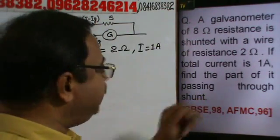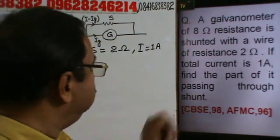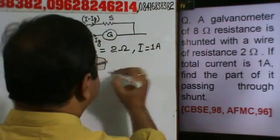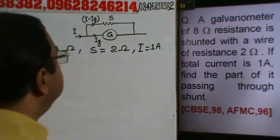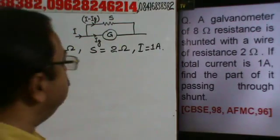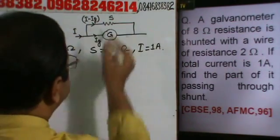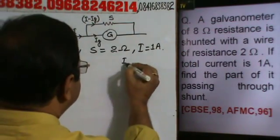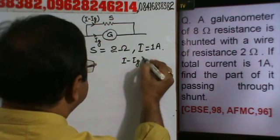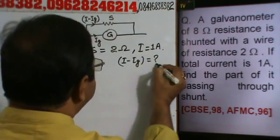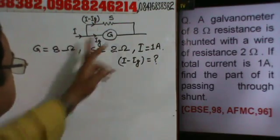Find the part of it passing through shunt. What do we need to calculate? We need to calculate I minus Ig value, this will be equal to 1.